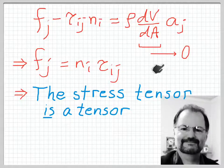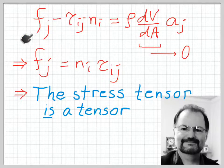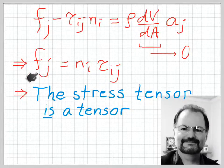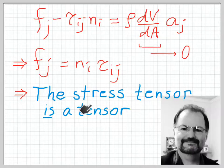We've shown that the right-hand side of this equation has to be zero, because the volume per unit area of our tetrahedron goes to zero. Therefore the left-hand side must also be zero, and the relationship between the force on the arbitrarily tilted surface and its unit normal is described in the usual way by the stress tensor. We've shown that the stress tensor really is a tensor, and we can go around calling it that without worrying.